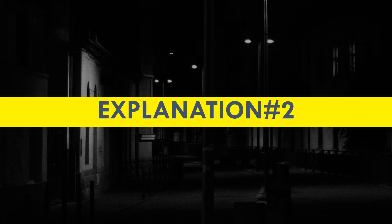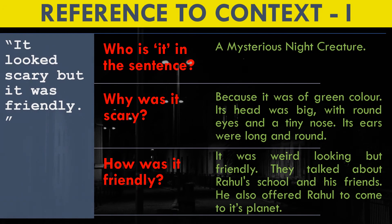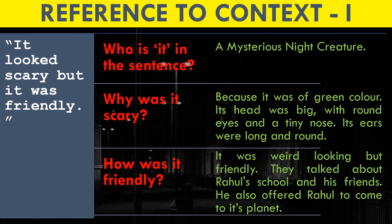Now we will do the question answers. First question: Who is 'it' in the sentence? Answer: It is a mysterious night creature. Why was it scary? Answer: It looked scary because it was green in colour, its head was big with round eyes and a tiny nose, and its ears were long and round. Next: How was it friendly? Answer: It was weird looking but friendly. They talked about Rahul's school and his friends, and it also offered Rahul to come to its planet.